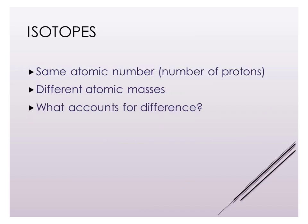The first thing we need to do is define what an isotope is. Isotopes are atoms of the same element because they have the same atomic number and therefore the same number of protons, but they have different atomic masses. Remember that the atomic mass includes both protons and neutrons, so if the number of protons is the same, the only thing that can account for this difference is the number of neutrons. So isotopes will have the same atomic number but a different atomic mass, and because they have the same atomic number they are the same element.